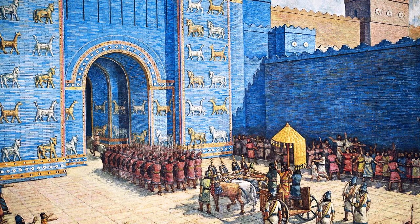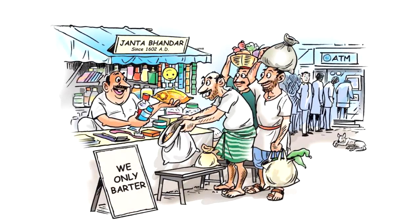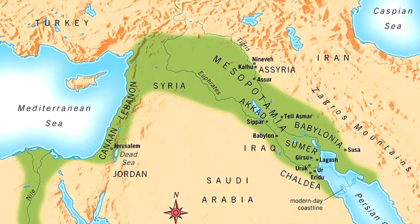This is where it all began. The barter system is the oldest method of exchange and began in 6000 BC, introduced by the Mesopotamian tribes. Under the barter system, goods were exchanged for other goods.